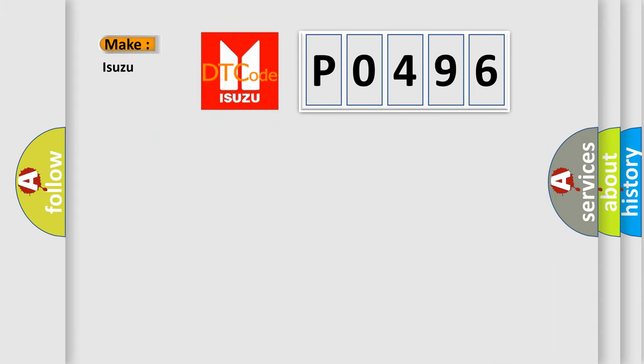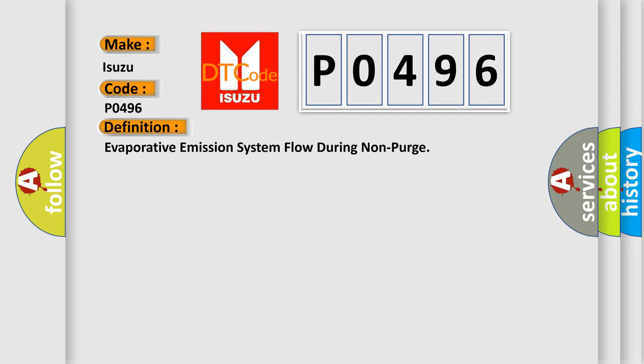So, what does the Diagnostic Trouble Code P0496 interpret specifically for Isuzu car manufacturers? The basic definition is: evaporative emission system flow during non-purge.